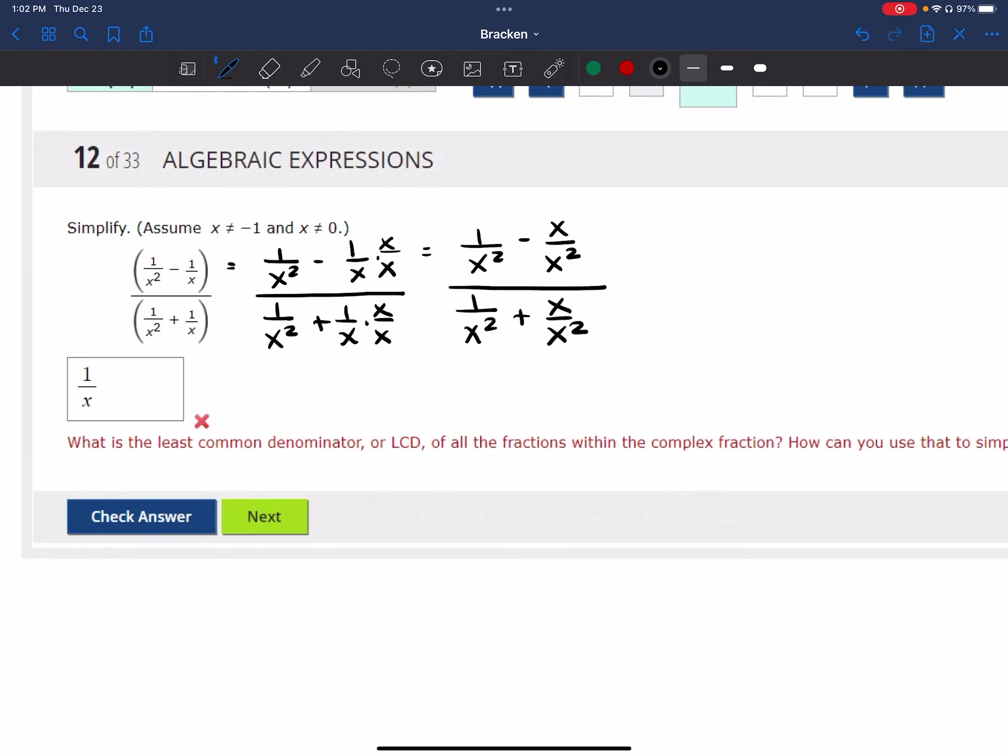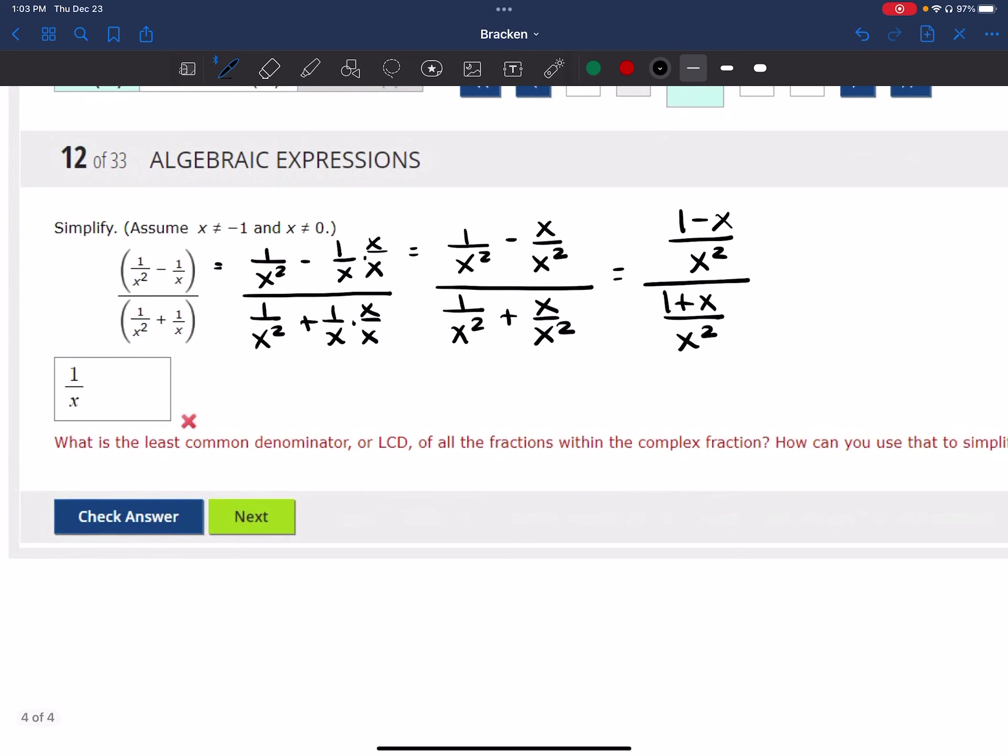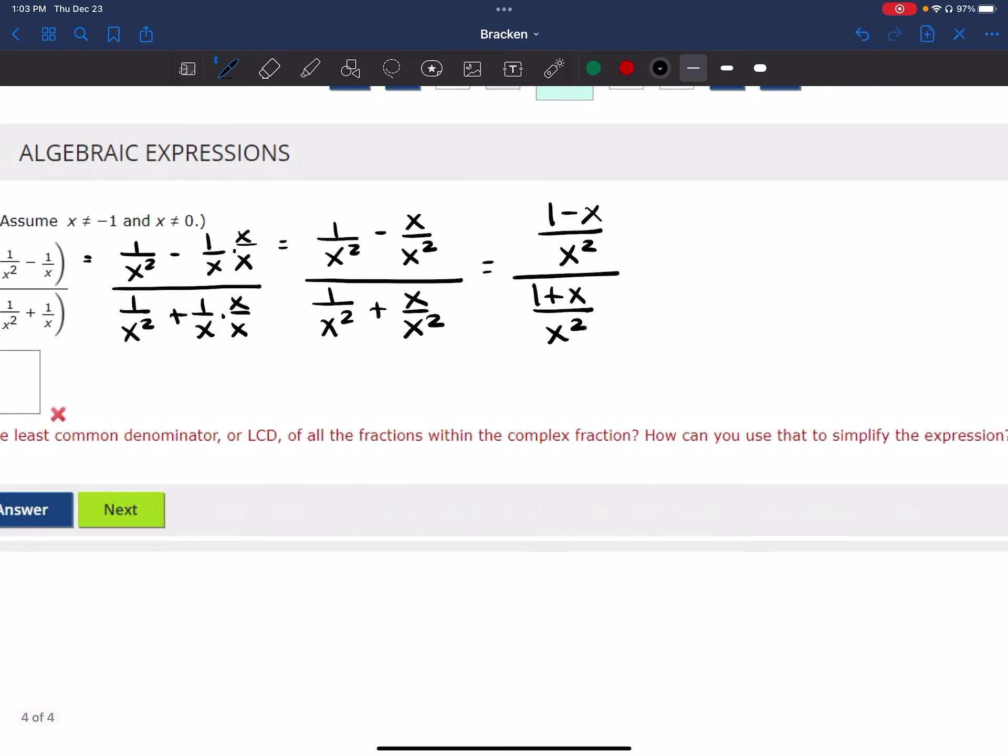Now I can combine these. This is going to give me 1 minus X over X squared all over 1 plus X over X squared. Now this makes me feel a lot better. I have X squared in both of the denominators. I know that when I get ready to divide fractions because that's all you're doing. You have a fraction in the numerator. You have a fraction in the denominator. So you are dividing fractions.